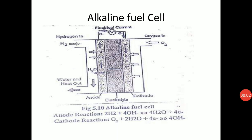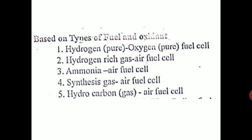Hello students, welcome to this discussion on fuel cells. We are looking at the alkaline fuel cell. Fuel cells have the same components — anode, cathode, and electrolyte — but the electrolyte makes the difference, which is why there are different classifications of fuel cells. The different types can be based on the type of hydrogen and oxygen being supplied.